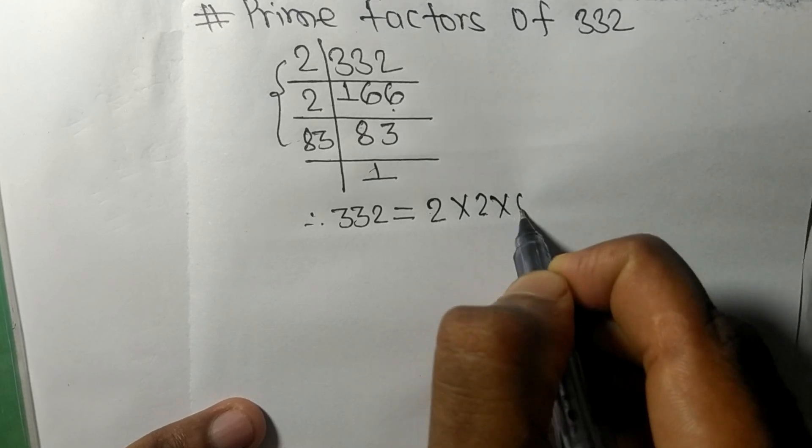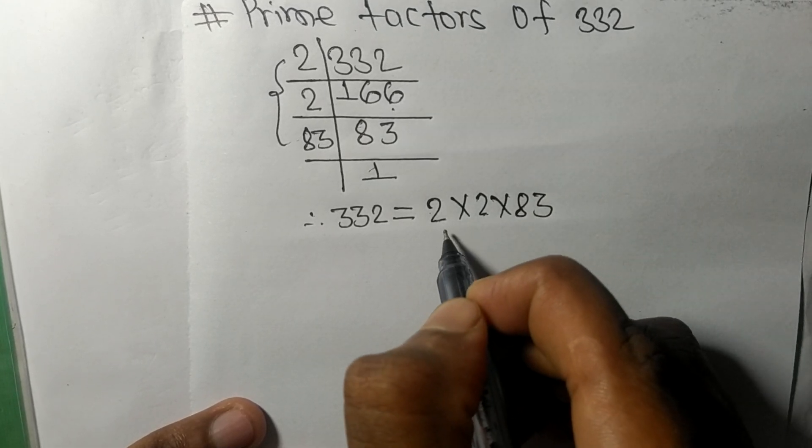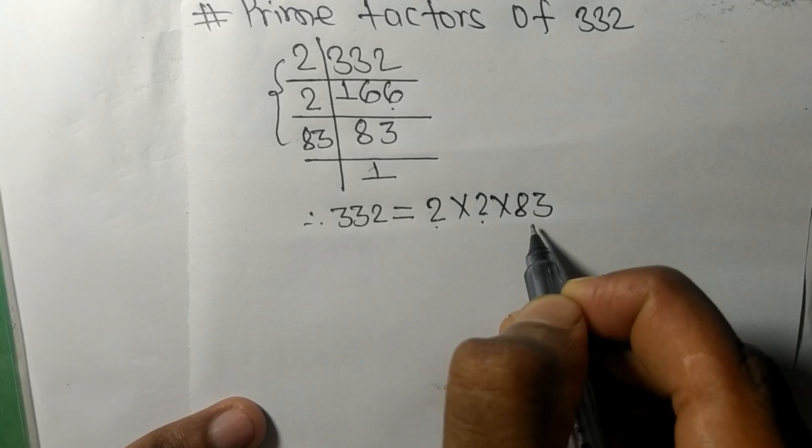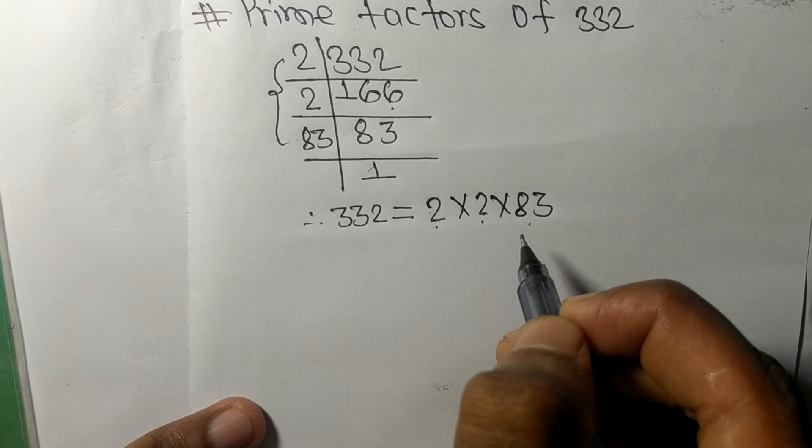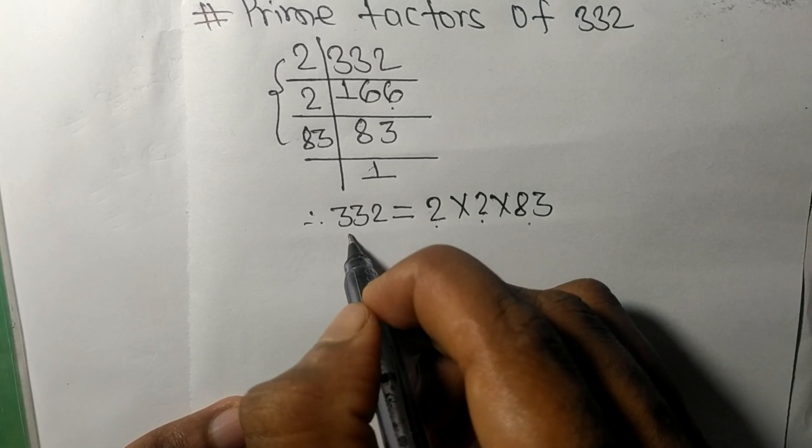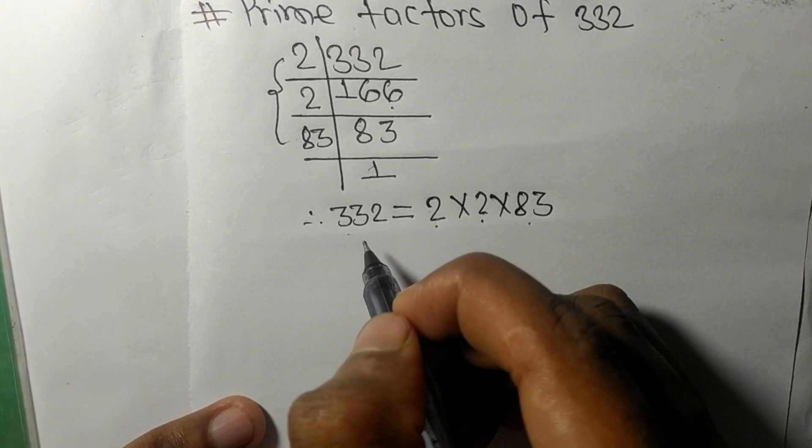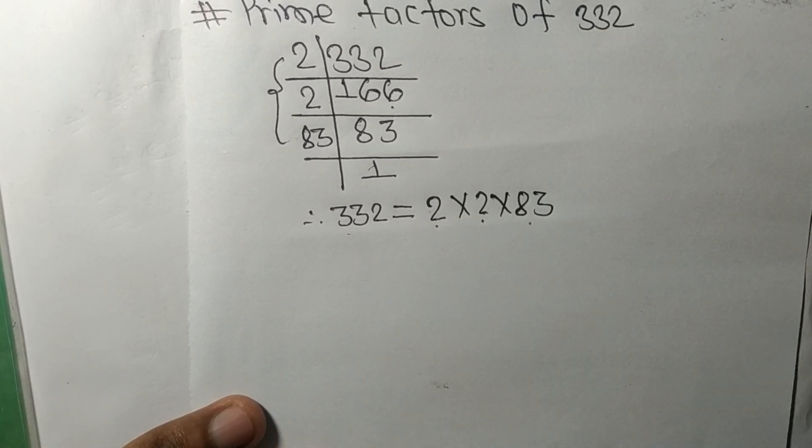So 2, 2, and 83 are the prime factors of 332. So this much for today and thanks for watching.